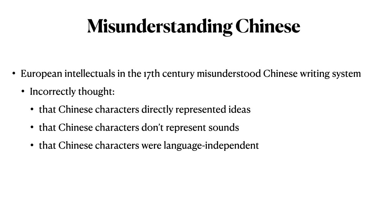European intellectuals in the 17th century misunderstood Chinese writing in three key ways. They incorrectly thought that Chinese characters directly represented ideas. They incorrectly thought that Chinese characters do not represent sounds. As a result of these two incorrect ideas, they incorrectly thought that Chinese characters were truly language independent. Based on this false conclusion, they had great hopes regarding universal language — the idea of a truly language-independent writing system where each symbol inherently represents an idea in a convention-free way.